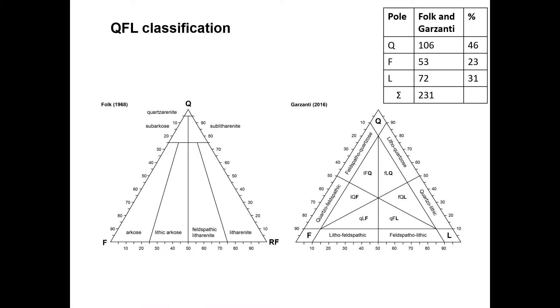Let's plot these values: 46% Q, 23% F, and 31% L. According to the Folk plot, the sandstone is a feldspathic litharenite.